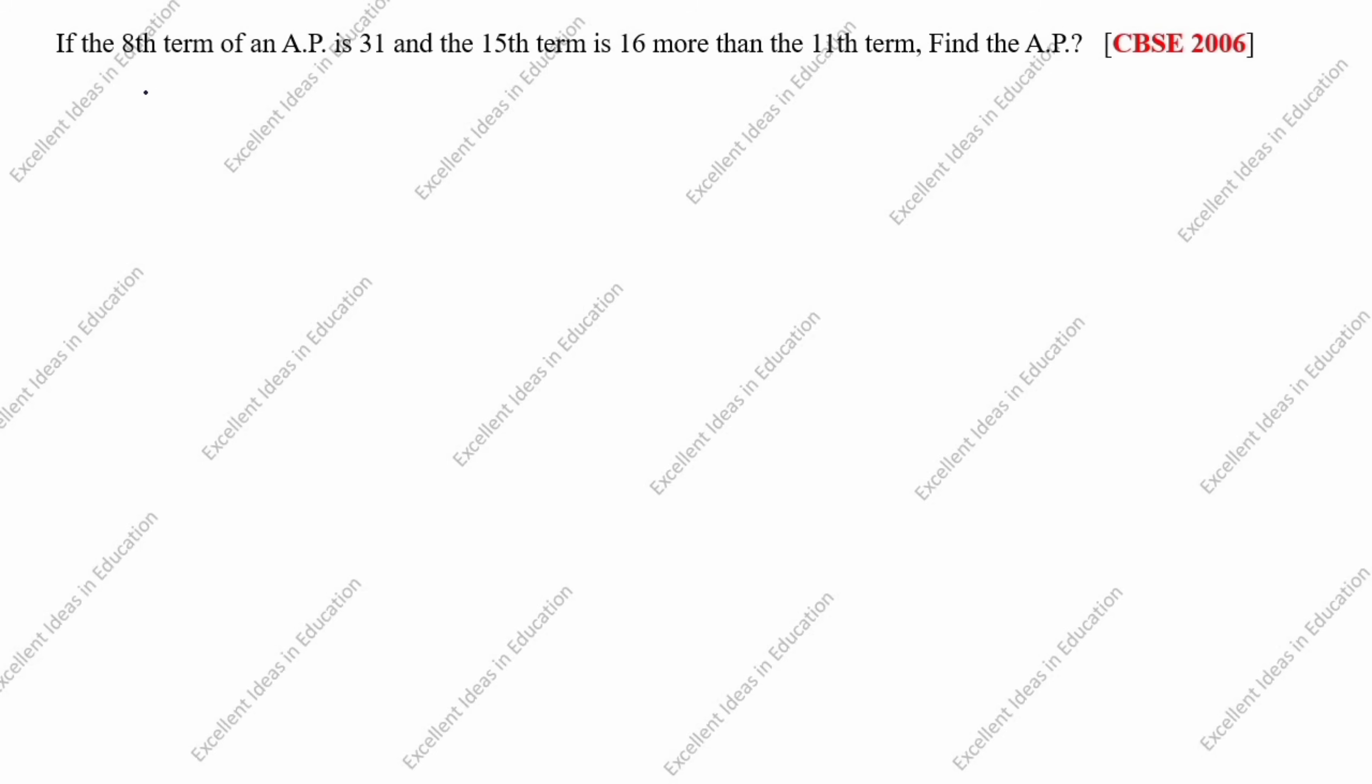What is given in this question? The 8th term of an AP, A8 is equal to 31. The 15th term is 16 more than the 11th term, so A15 is equal to 16 plus A11.